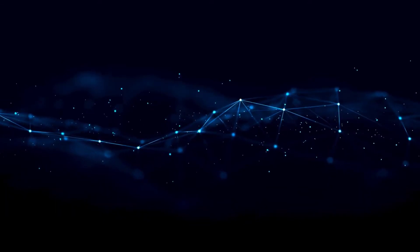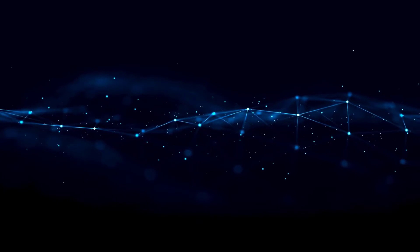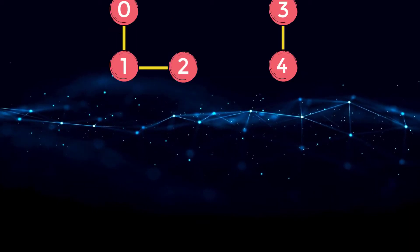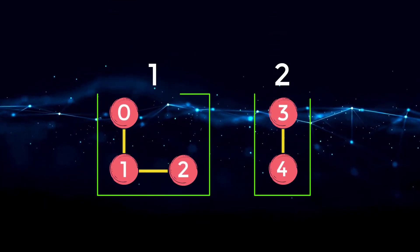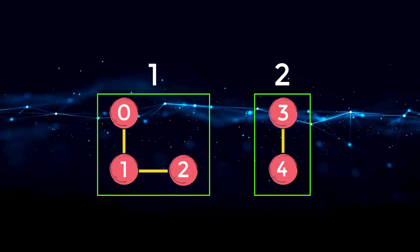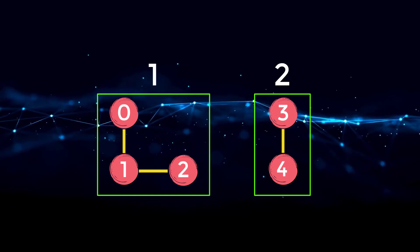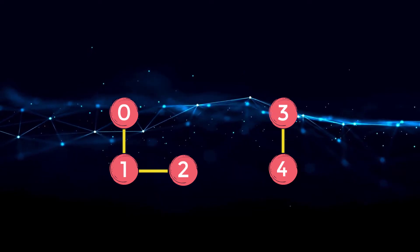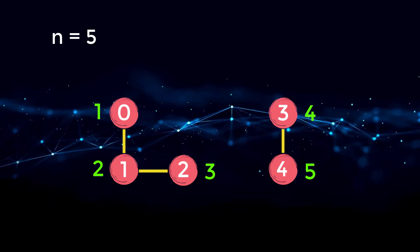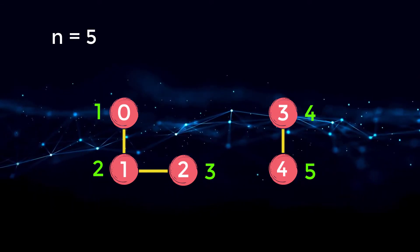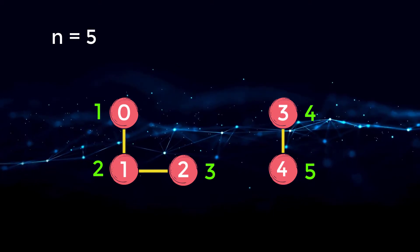For this problem, we need to count how many connected components we have inside our graph. Let's say we have the following graph. In this example, we would have two different components: the first component being from zero to one, one to two, and the second component being from three to four. We have a total of five nodes, so N equals five, and each node is labeled from zero to N minus one with no duplicate values.